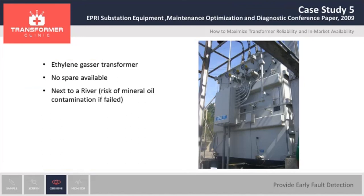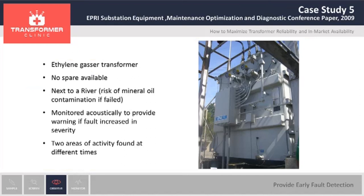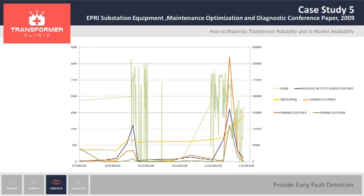The next case is the last case study — a case for online monitoring. This is a relatively small transformer — a 6 MVA transformer. The main gas was ethylene, indicating a high temperature fault. The challenges for the utility were there were no spare units on-site, and the transformer was installed next to a river on the east coast. The concern was if there was a catastrophic failure, they might have a fire or oil being spilled, and being the river so close, they were concerned about oil getting into the river and receiving a fine from the EPA. They decided to monitor the transformer acoustically to see if there was an increase in activity. This plot shows data for eight months.